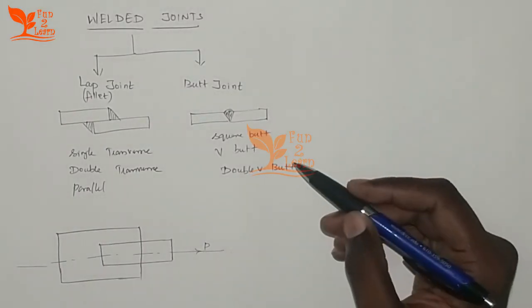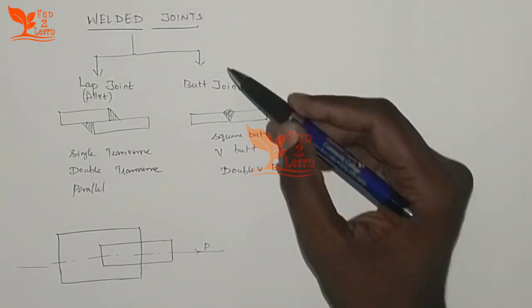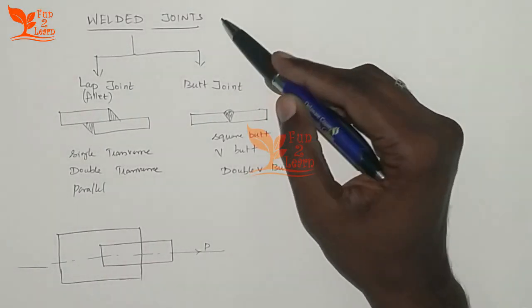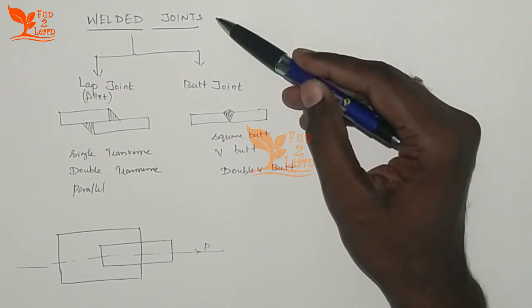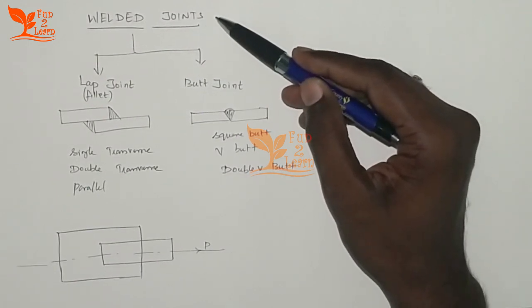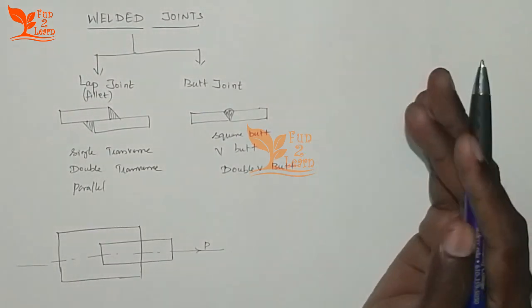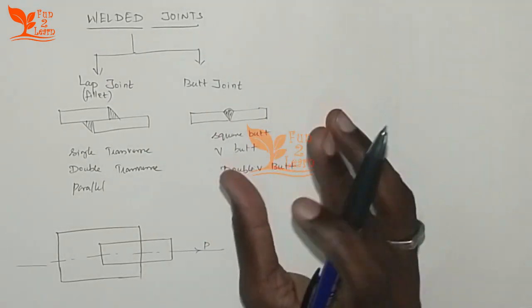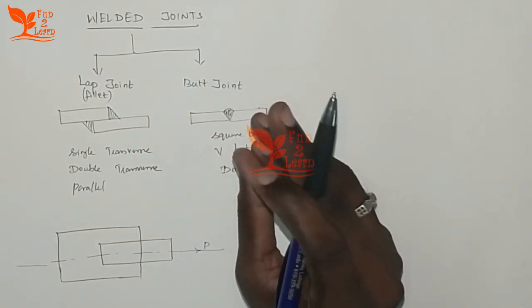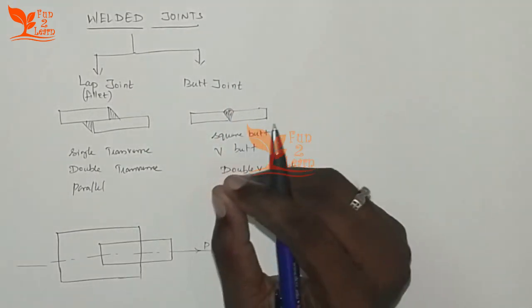Welcome to the Design of Machine Elements class. First of all, what is welding? Welding is the process of heating two metallic components and joining them together.